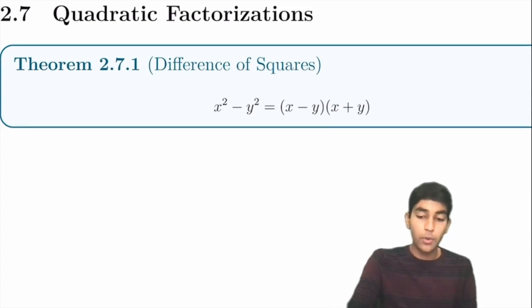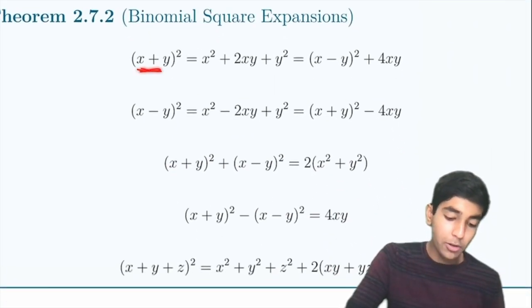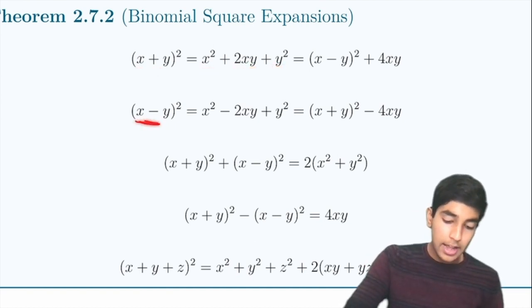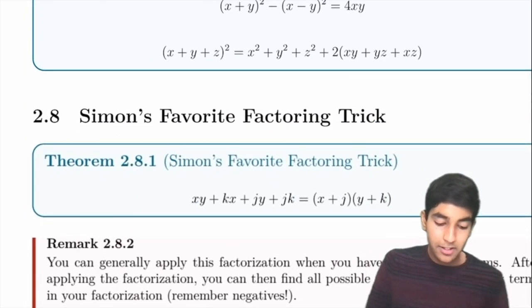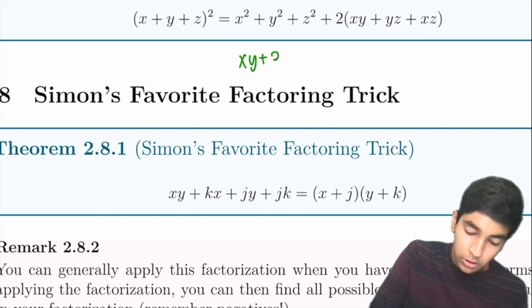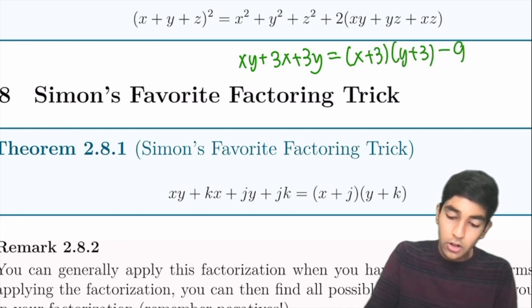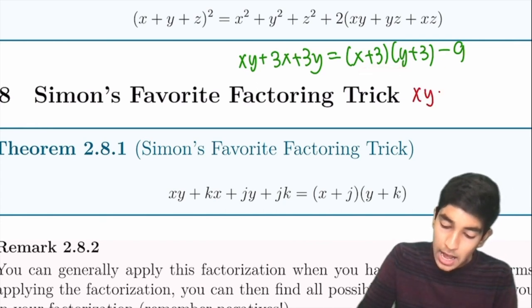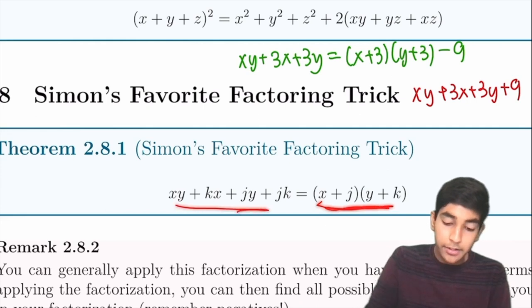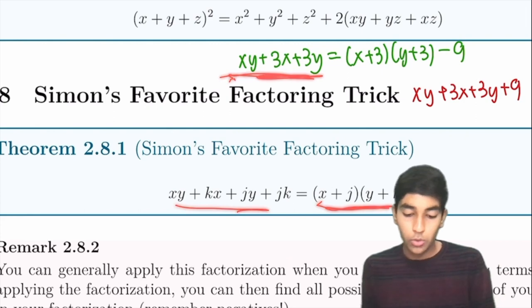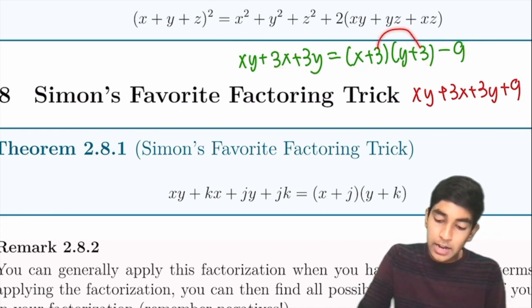Now factorizations. Difference of squares: x² − y² = (x − y)(x + y). Binomial square expansions: (x + y)² = x² + 2xy + y², and (x − y)² = x² − 2xy + y². Simon's Favorite Factoring Trick: for example, xy + 3x + 3y = (x + 3)(y + 3) − 9, because expanding (x+3)(y+3) gives xy + 3x + 3y + 9.